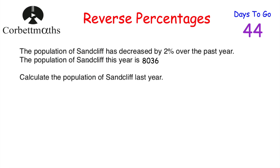Let's look at a question for you to try yourself. The population of Sandcliffe has decreased by 2% over the past year, and the population this year is 8,036. Calculate the population of Sandcliffe last year. This is a reverse percentages question because we're going backwards to find what the population was before it decreased by 2%.